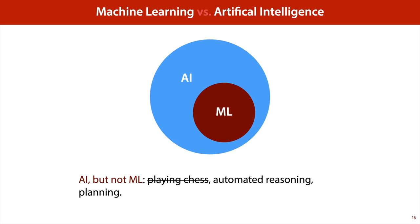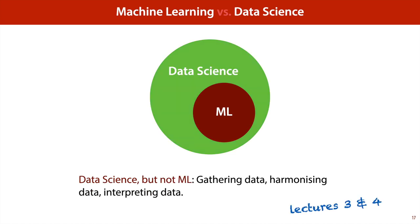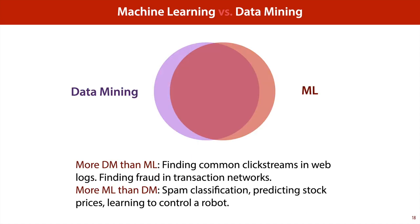Another popular field is data science: the general business of looking at data and making inferences, dealing with data, pre-processing data, making inferences and learning from it. Machine learning is mostly a subset of data science — almost everything we do in machine learning counts as data science, but not everything we do in data science counts as machine learning. Tasks that are data science but not machine learning include the business of gathering data, harmonizing data, pre-processing it, and interpreting data. Another phrase you may have heard is data mining. This is very closely related to machine learning, so much so that they are almost the same field, and the best way to represent them is probably as an intersection in a Venn diagram.